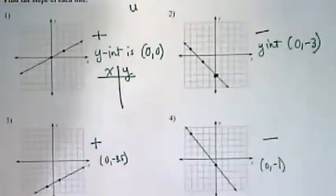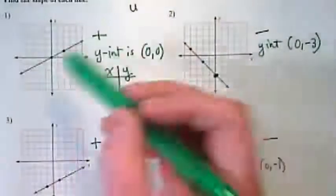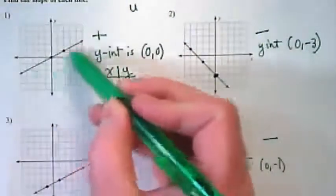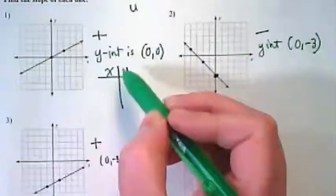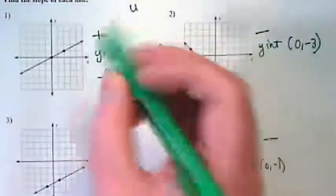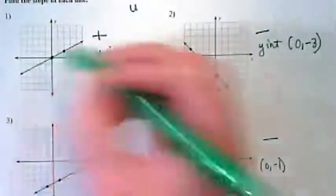So just to review a few of the things that we've found so far, we've noted that this is a positive slope. We have found that our y-intercept on this graph is at the origin. It's (0,0).